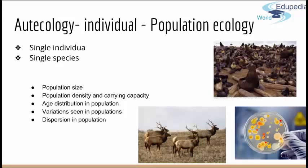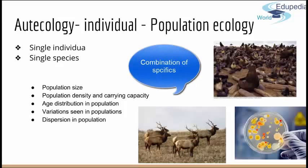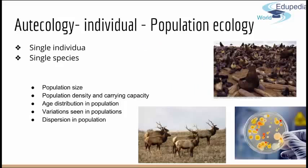Autoecology works on population growth, fluctuation, spreading, and both intraspecific and interspecific interactions. Some of the questions autoecology deals with include population size, population density, carrying capacities, age distribution, variation in population, and so on. It can deal with any of these individually, or include interactions involving several of these measurements.